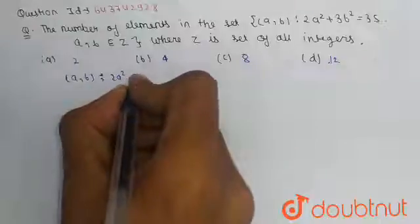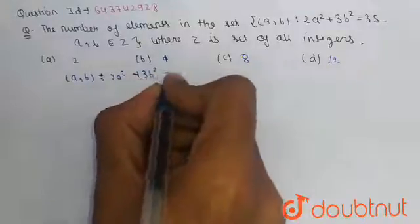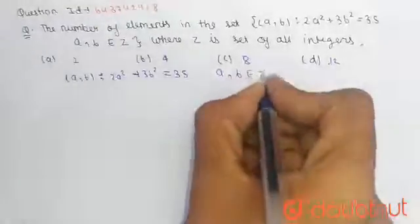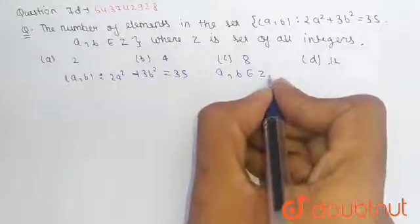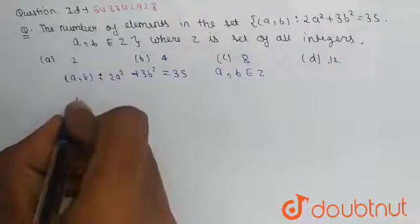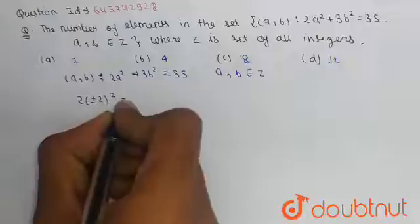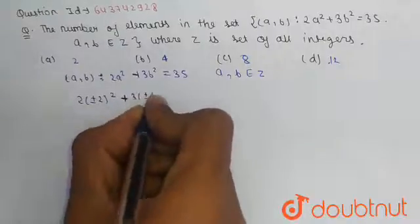2a² + 3b² = 35 where (a,b) is an element of Z, where Z means integers. So what we have to simply do: 2(±2)² + 3(±3)²